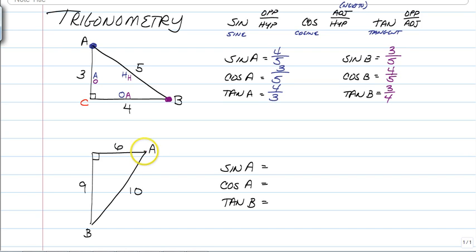So the sine of A, if we are standing on A, this is always our hypotenuse, but the opposite side is the one farthest away, and the adjacent side is right next to it, but not the hypotenuse. So the sine of A would be opposite over hypotenuse, which would be 9 over 10, and the cosine of A would be the adjacent over the hypotenuse, so it would be 6 over 10.